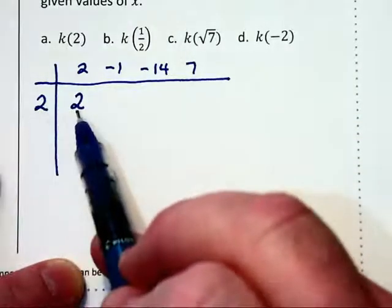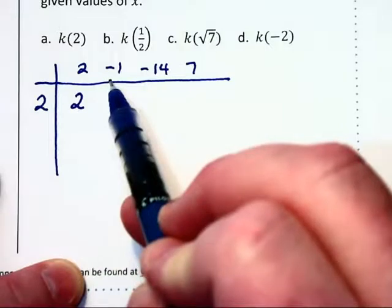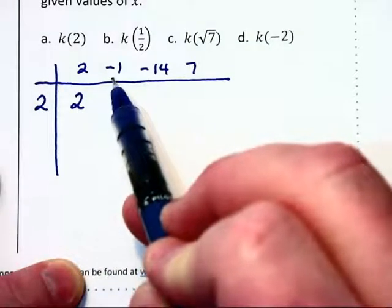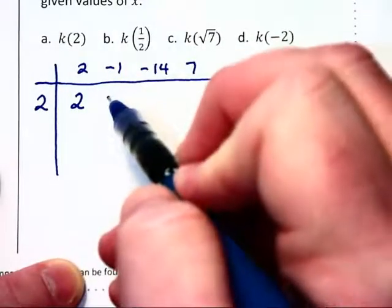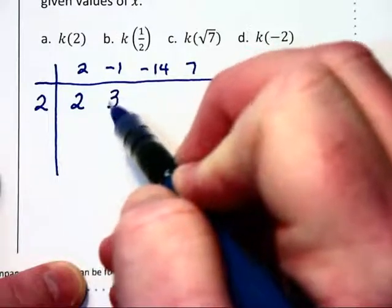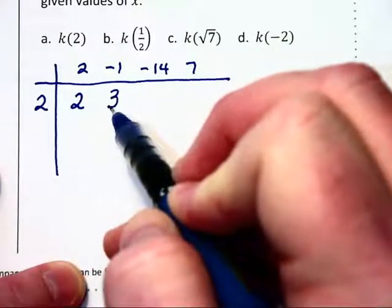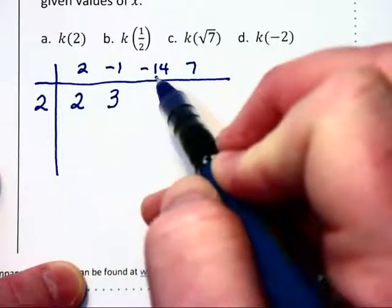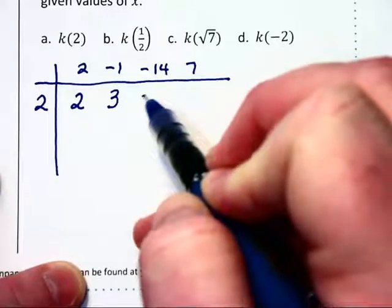2 times the 2 we just brought down is 4. We would write the 4 here, but we don't. Just think of the 4 plus that negative 1 gives us a 3. 2 times 3 then is 6. Pretend we write the 6 down, add it to the negative 14 to get negative 8.